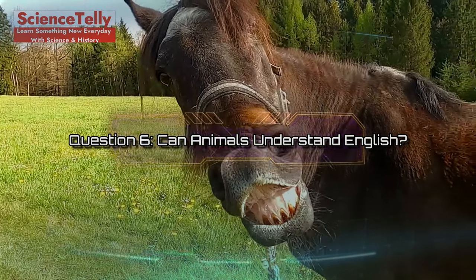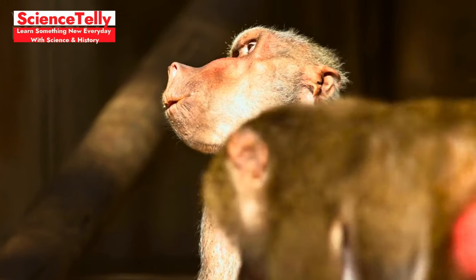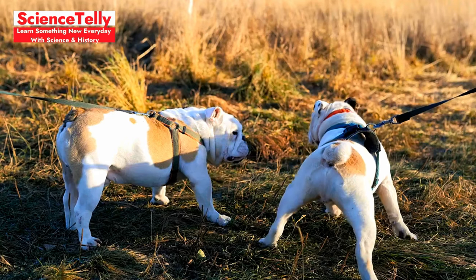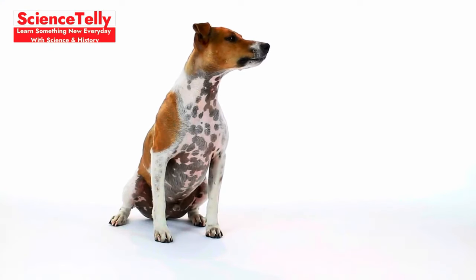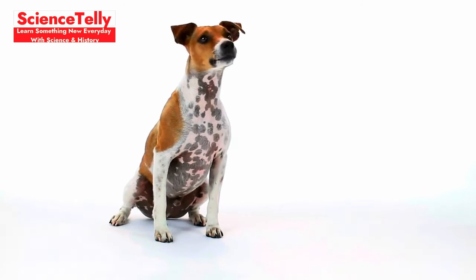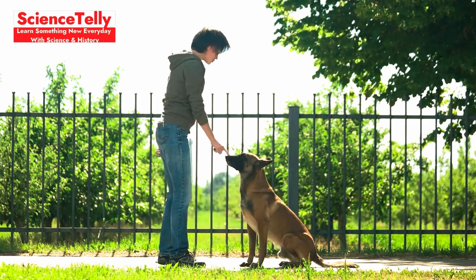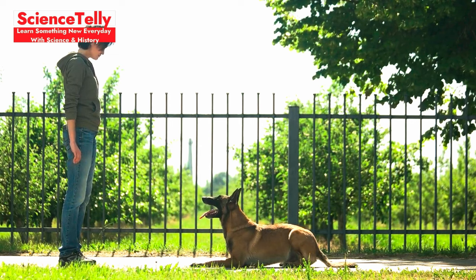Question 6. Can animals understand English? Let's explore this intriguing question. If you've ever talked to your pet, you might have felt like they understood you. While animals don't grasp language the same way humans do, some can learn to recognize certain words. For instance, dogs can learn hundreds of words, often linking them with specific commands or objects, like knowing that sit means to sit down.